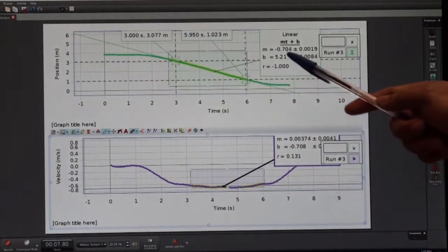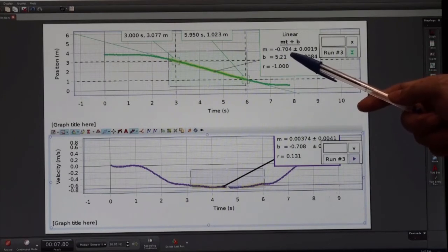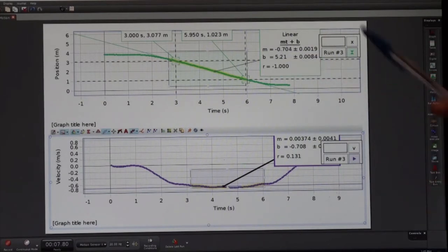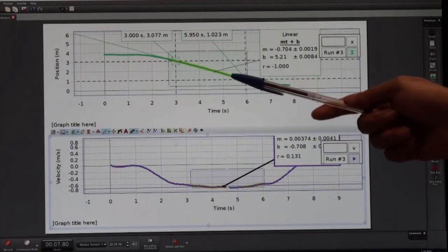We have already calculated—our software has calculated—the slope, which is negative 0.704 meters per second, because the slope is the velocity. Now if you draw this slope at every point on the position-time graph, you see a straight line.